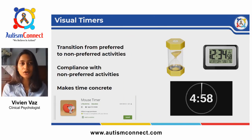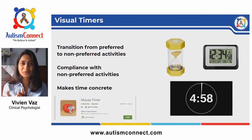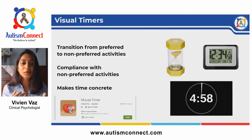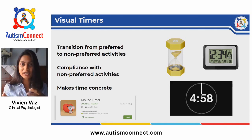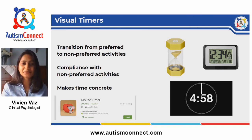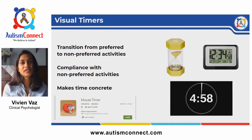The next strategy is using visual timers. Don't we sometimes find shifting from one activity to another in our daily routines a little difficult? For example, after coming back from a vacation we might find it difficult to adjust to going back to work. If we're in the middle of a pleasant activity like reading or watching TV and have to start doing housework, it will take time to adjust. Children with autism can also find it difficult to shift from one task to another, which is why they need to be given enough time to process this information.